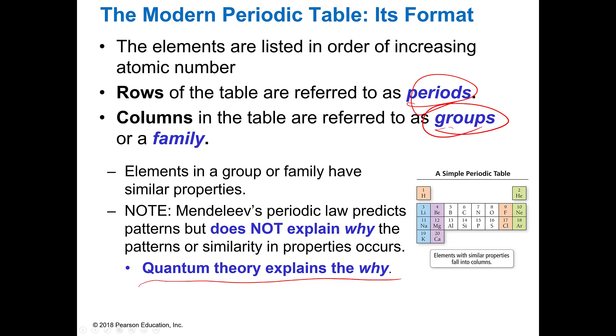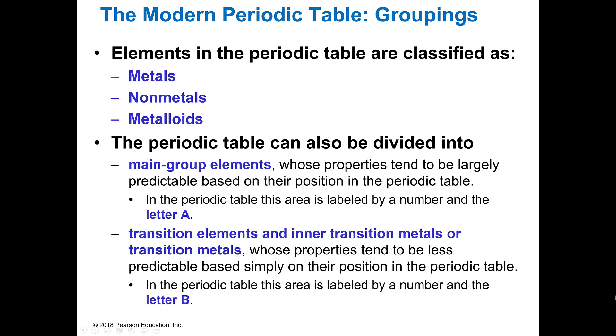But it is a very handy thing because when we're trying to figure out how things behave, if we know they're in the same group as something else, we know they're going to have similar characteristics. The elements in the periodic table we're going to classify as metals, non-metals, or metalloids, which have characteristics of both.